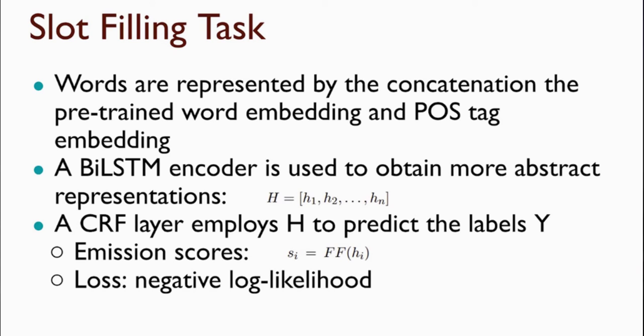For the main task, we represent each word using its pre-trained word embedding and a randomly initialized embedding of its POS tag, and we update these embeddings during training. We then use a BiLSTM to encode the sequential order of the words in the sentence, using the hidden states as word representations. These representations are employed by a CRF layer to predict the label sequence. We use the hidden states and a feed-forward neural network to generate emission scores at each time step for the CRF layer, and train using negative log-likelihood as the loss function.